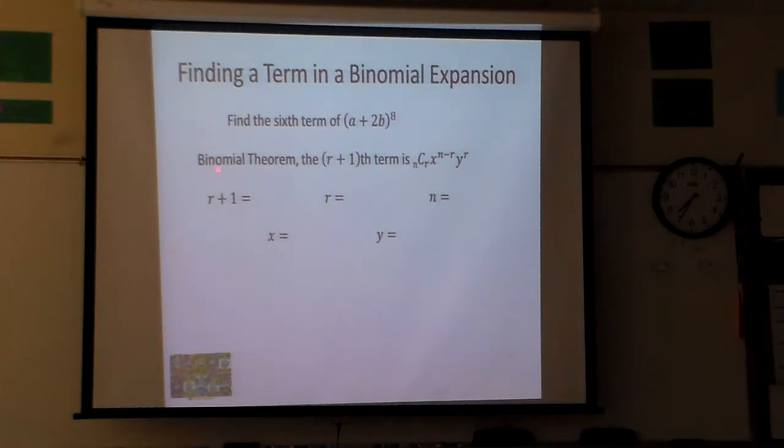In this particular one, R plus one is six. So we want to find the sixth term, the sixth term of this right here. So basically that means R plus one is six, so that means R is five. My N is eight. And notice my X is, in a sense, the A for my theorem, and the Y will be the 2B. So I'm going to go up here and plug these in.